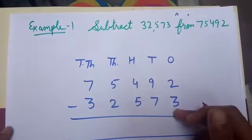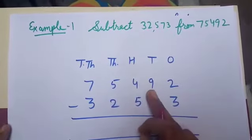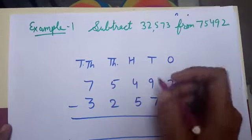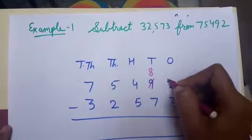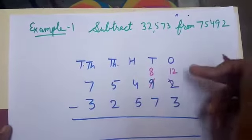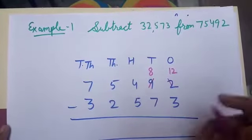I can't subtract. So I borrow from 9. When I borrow from 9, then this 9 become 8 and this 2 become 12. 12 minus 3, 9.